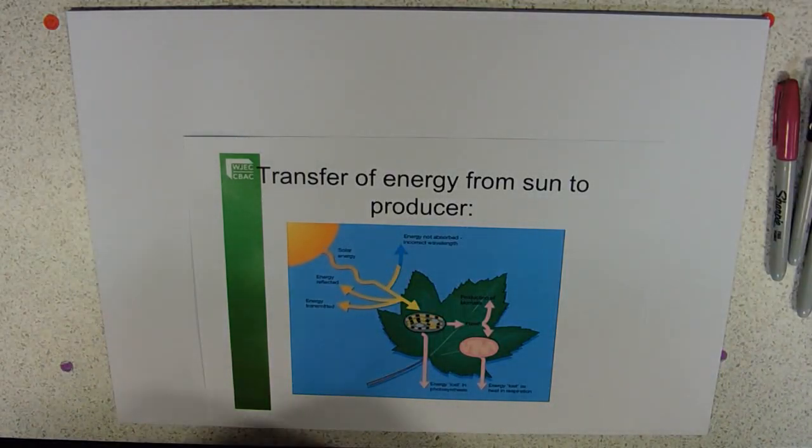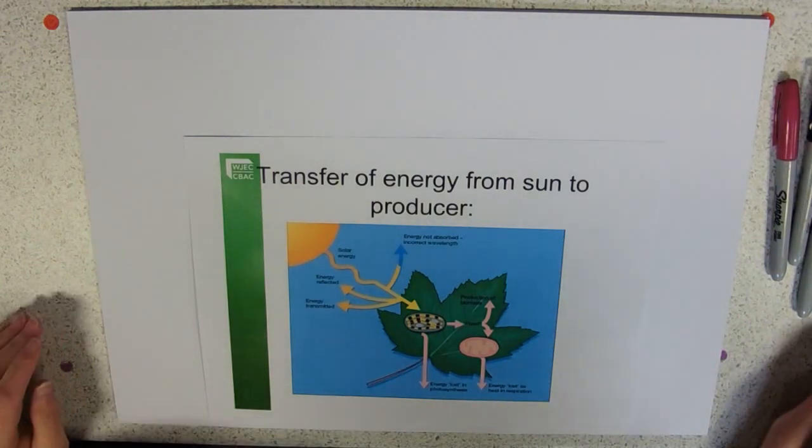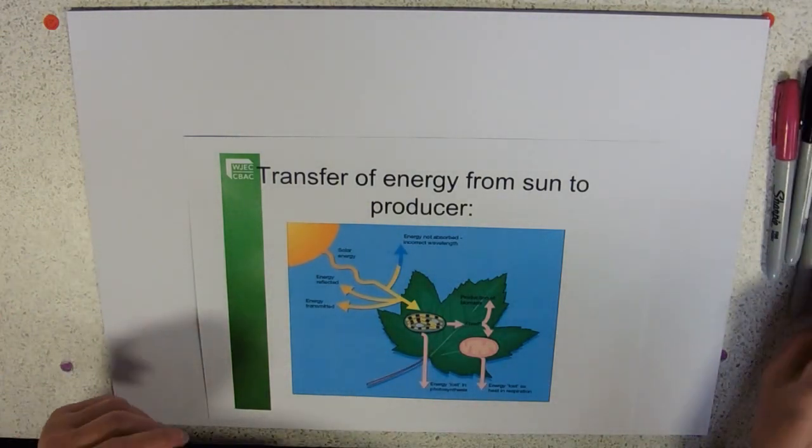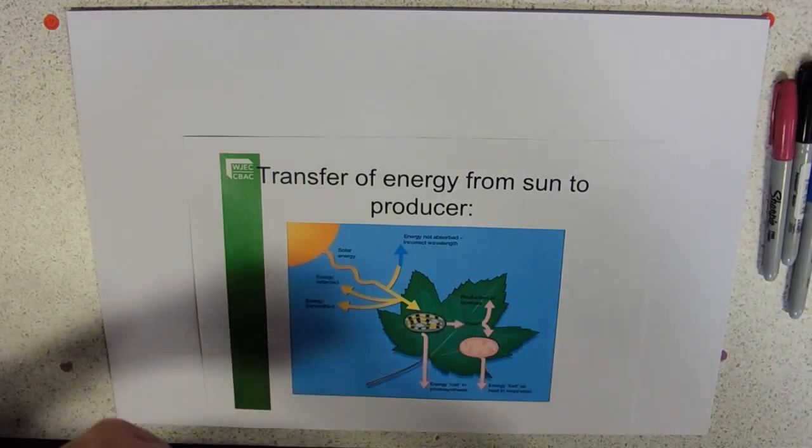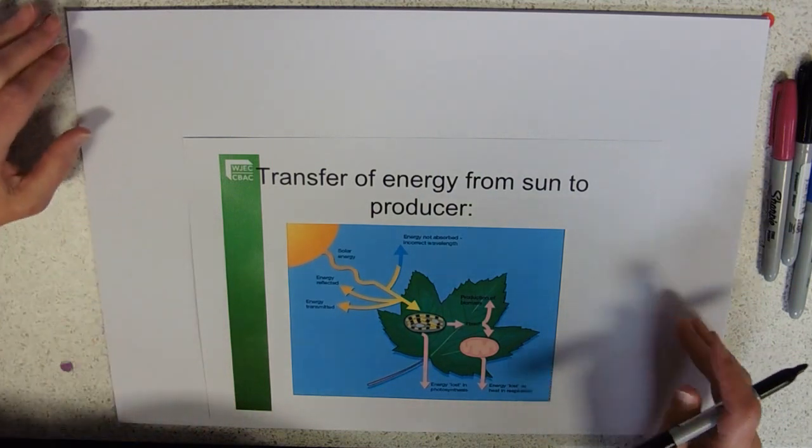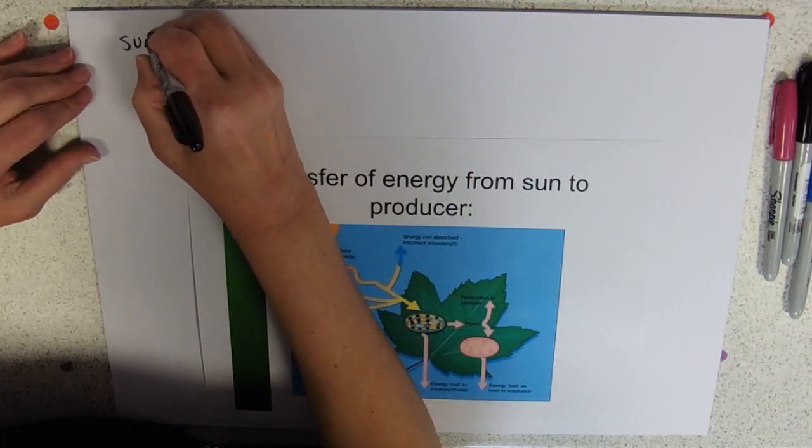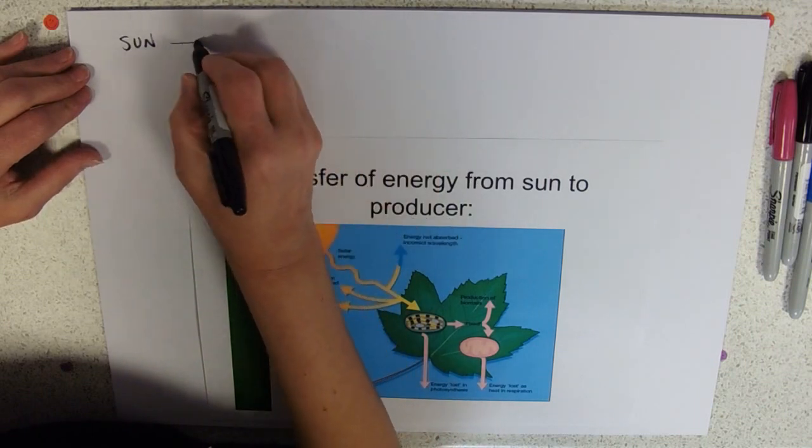We're going to talk about energy flow through ecosystems. One thing that you all know is that all the energy on the planet is fixed into organic molecules. The energy ultimately derives from the sun.